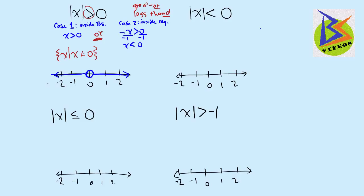Let's look at another example: the absolute value of x is less than zero. We apply the same approach — case one: x is less than zero, case two: negative x is less than zero. Graphing case one gives an open circle and an arrow pointing to the left. Dividing case two by negative one gives x is greater than zero. Since this is a less than, it is an AND statement, meaning we look for the overlap. There is no overlap because zero is not included, so we have no solution — the empty set.